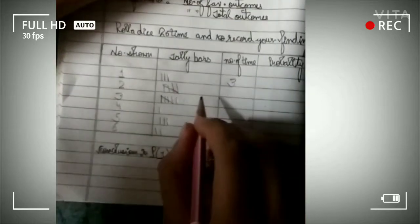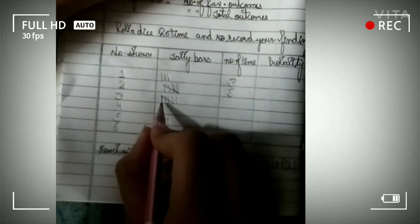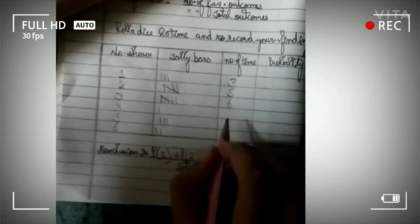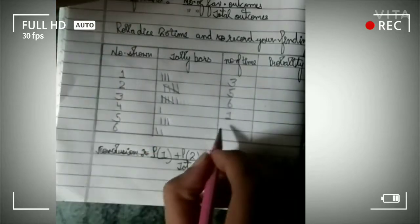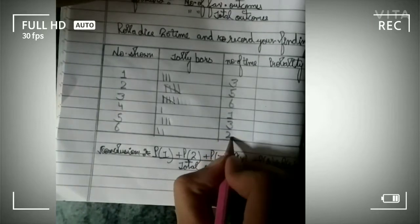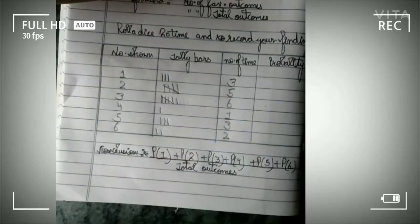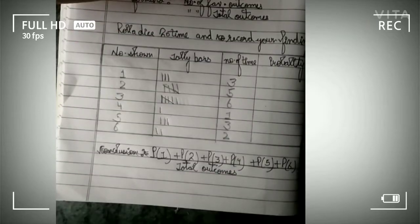Here tally bars are 5, so 5. Here 6, and here 1, here they are 3, and 2. So let's total this, and as you will see that total will be 20 automatically.